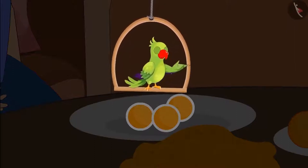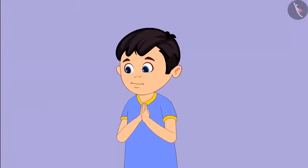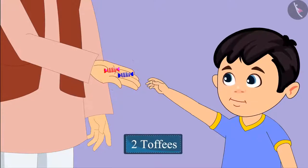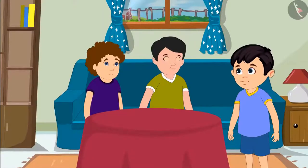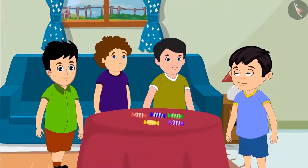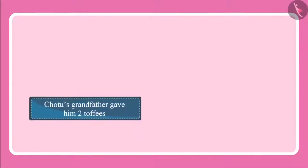It is festival season. Many guests are expected to come to Chotu's house. His grandmother and grandfather reached before everyone else. Hello grandmother, hello grandfather. Chotu's grandfather gave him two toffees. After some time, some of Chotu's friends also arrived. Chotu's friends also brought some toffees for Chotu — they gave Chotu five toffees. So can you tell me how many toffees did Chotu get in total? Come let's see. Chotu's grandfather gave him two toffees.